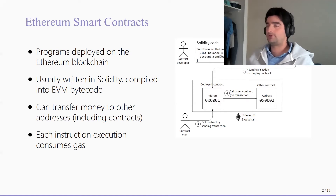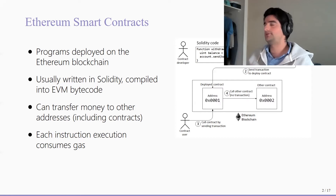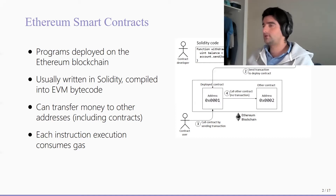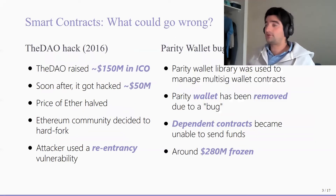There are also some more blockchain-related instructions such as variable call, which allows a contract to call into another smart contract. Once a user compiles his code down to this EVM bytecode, he can send a transaction containing his bytecode. This will be deployed to a new address on-chain, and then other users can interact with this program by sending transactions to this particular address.